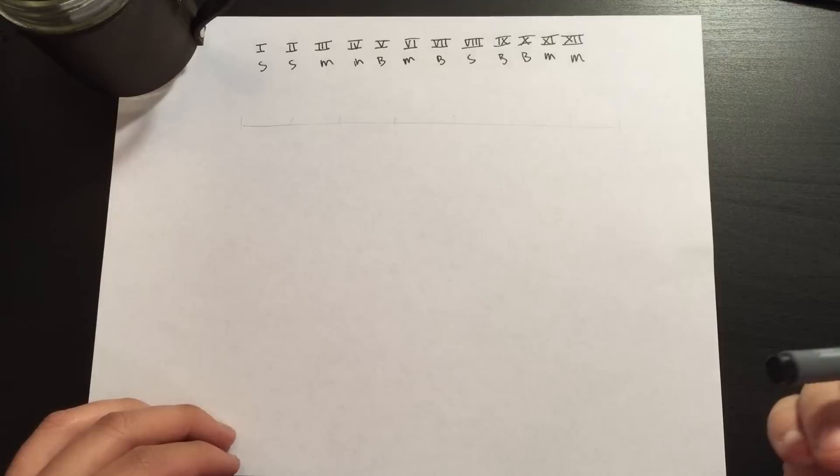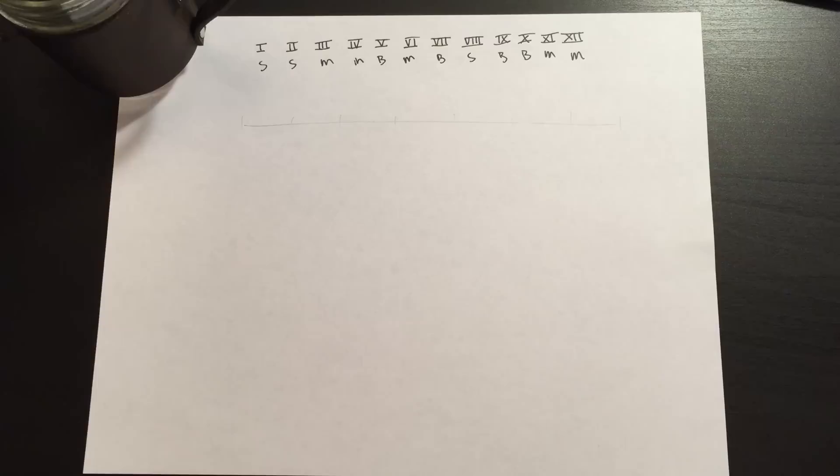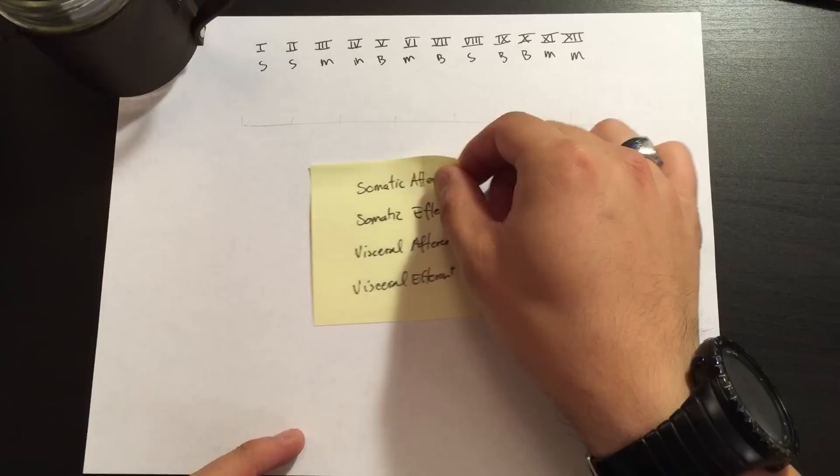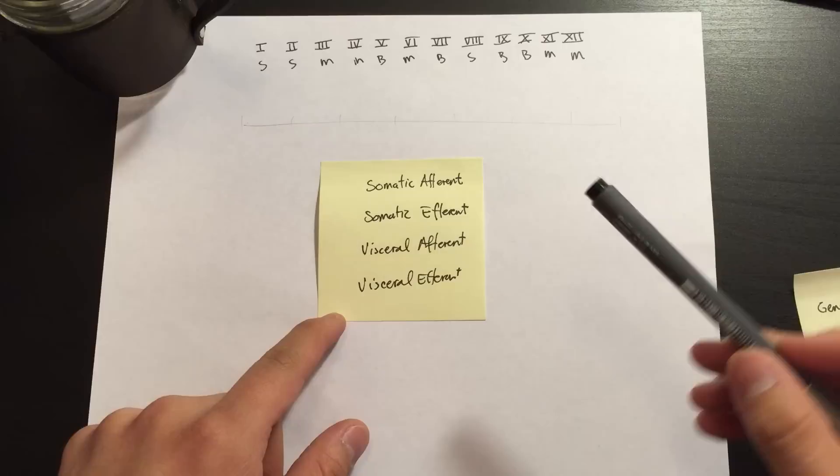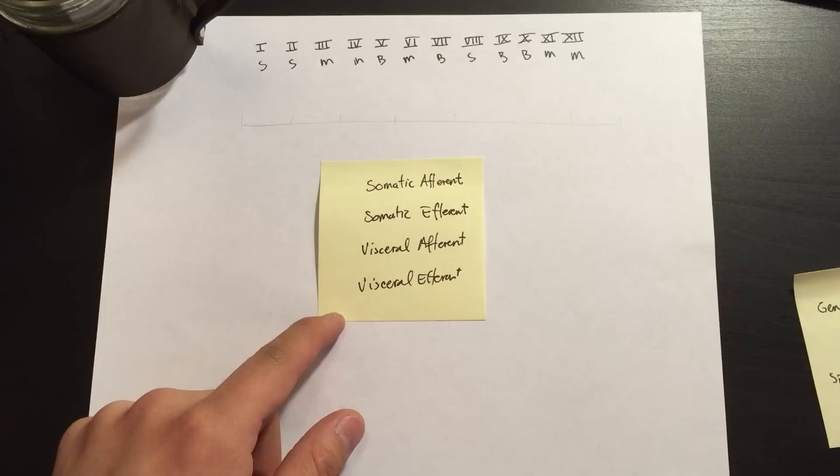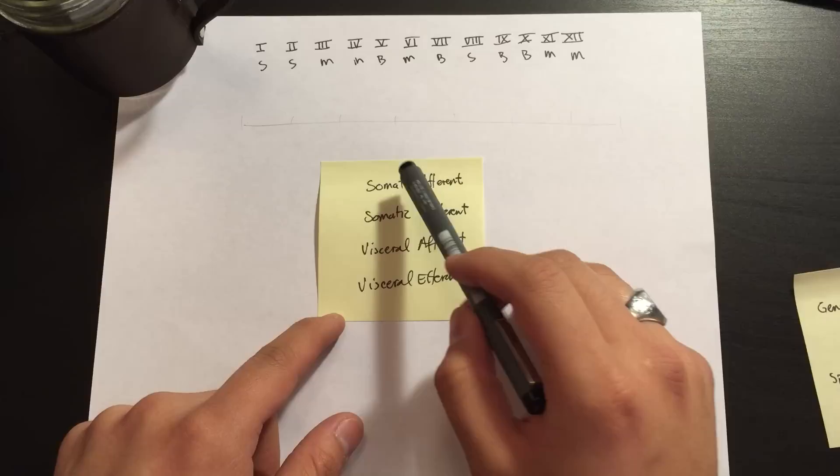However, we can divide the cranial nerves up even more specifically into other categories that would give a little more information about what they do. So fibers that are considered afferent are fibers that are going from the body and bringing information up to the brain, so these would be sensory. Or efferent, these are fibers that are going from the brain going down to the body to provide control.